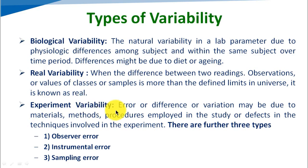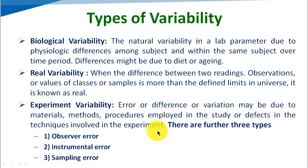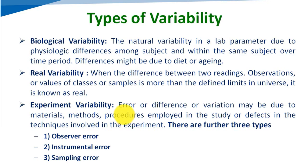Third is experiment variability. Error or difference or variation may be due to the material, method, or procedure employed in the study, or defects in the techniques involved in the experiment. The variability may be due to material, methods, or whatever procedure we followed for testing. If there is a difference or error in the result because of these factors, that is known as experiment variability.